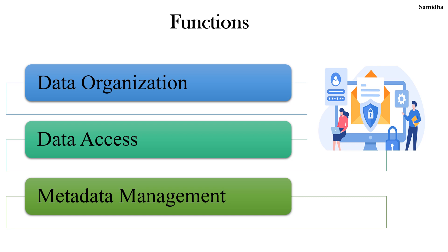We'll see different functions of a file system. A file system defines how the data is organized, accessed and how the metadata is managed. First is data organization — it determines how and where the data resides or is arranged, and it also defines the structure of the file system.